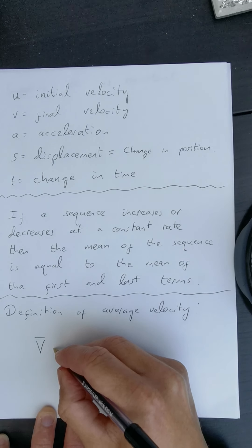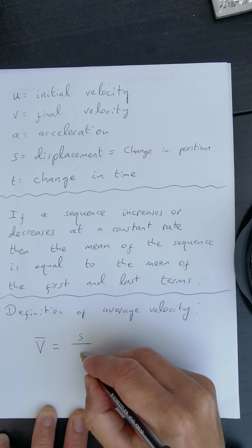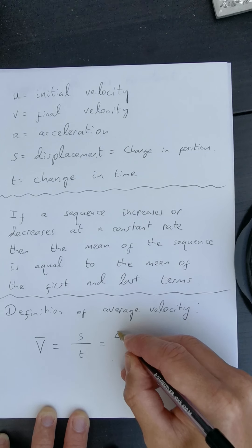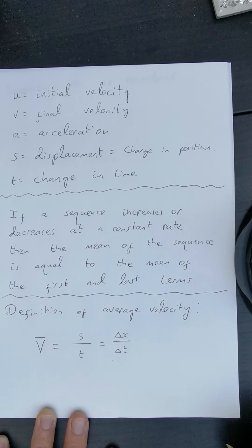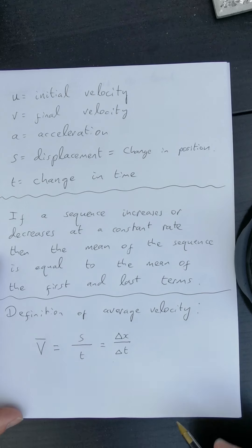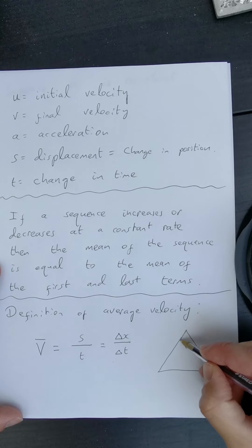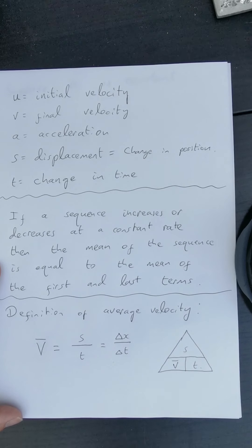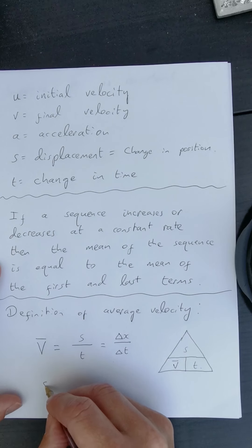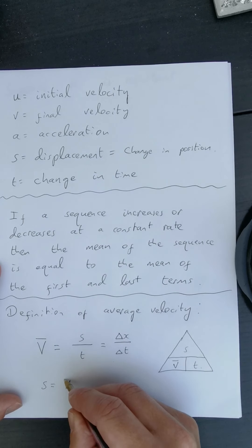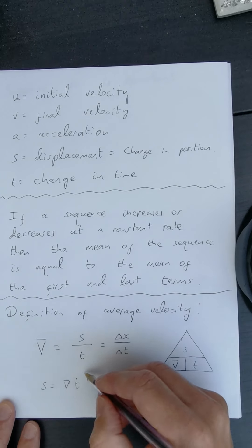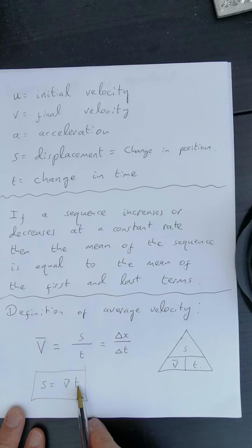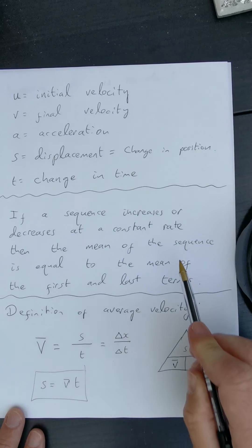The other thing is the definition of average velocity. Average velocity V-bar is defined as displacement divided by the change in time — sometimes written as Delta X over Delta T. From the multiplication triangle, I can rewrite that as: displacement S is equal to V-bar, the average velocity, multiplied by T. That version of the equation is going to be important.